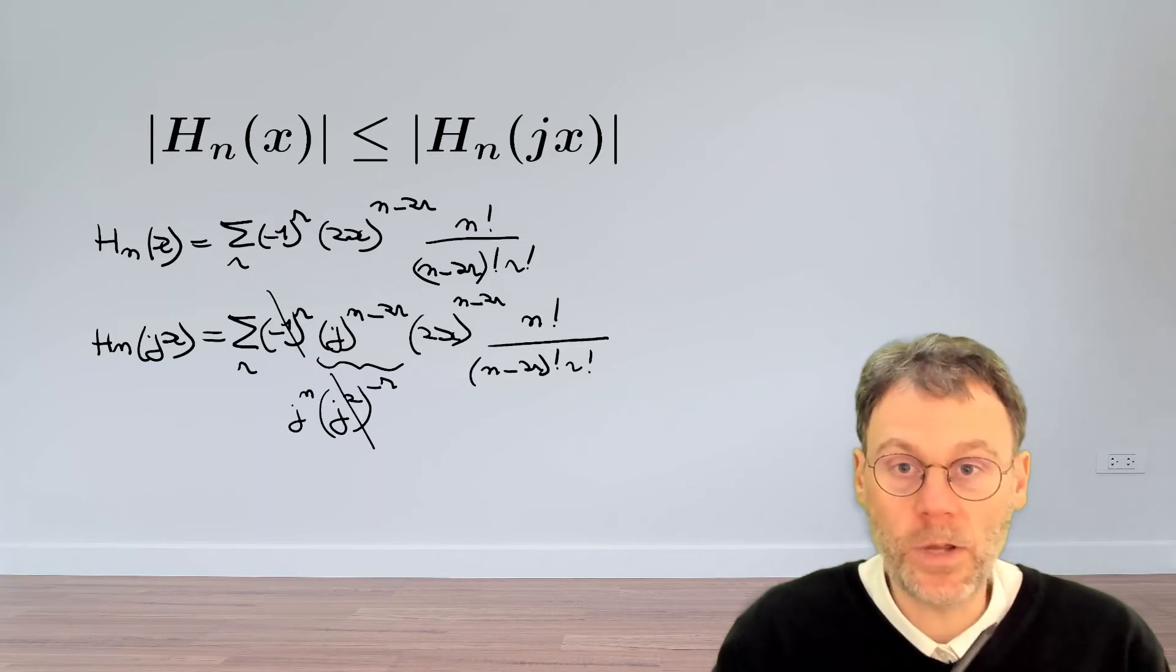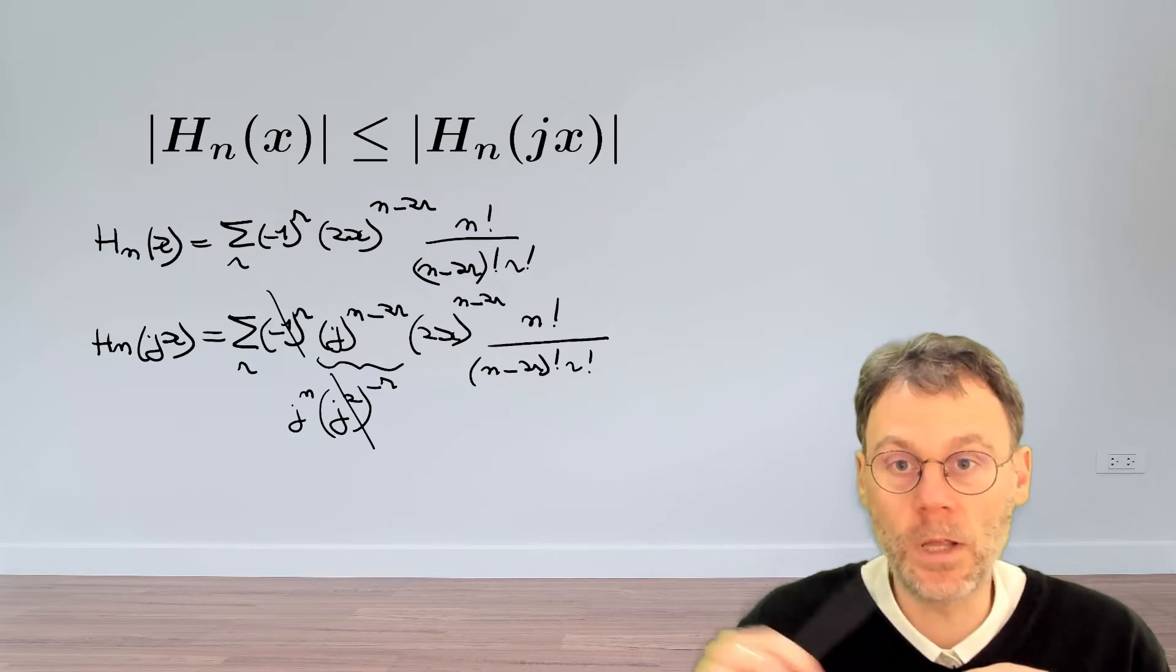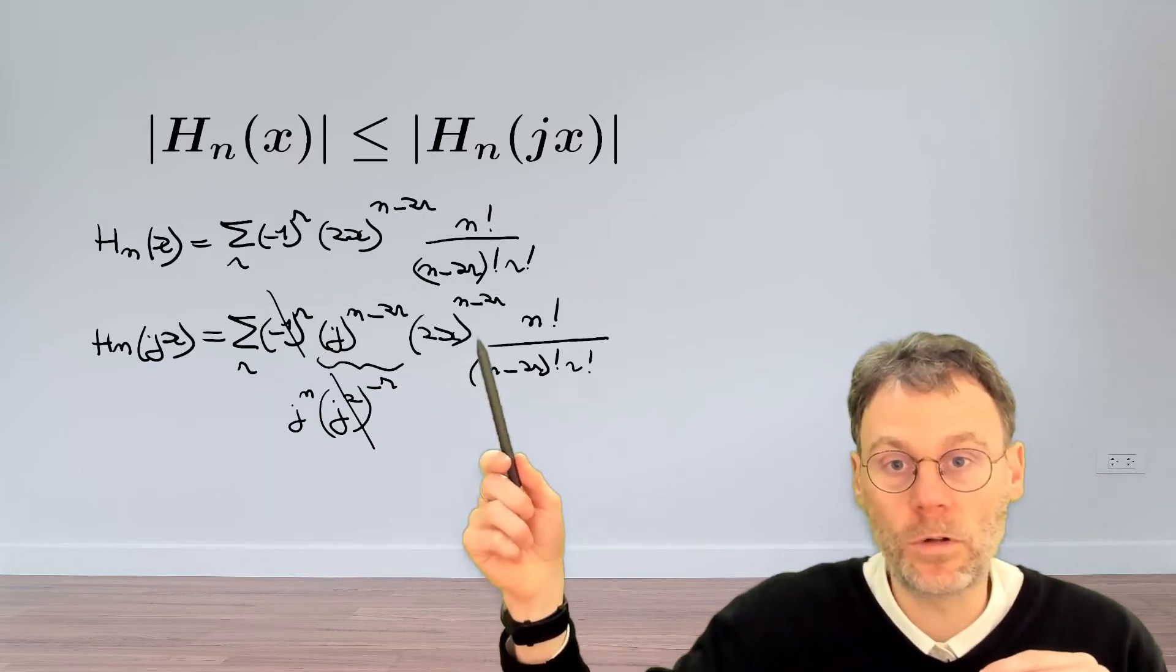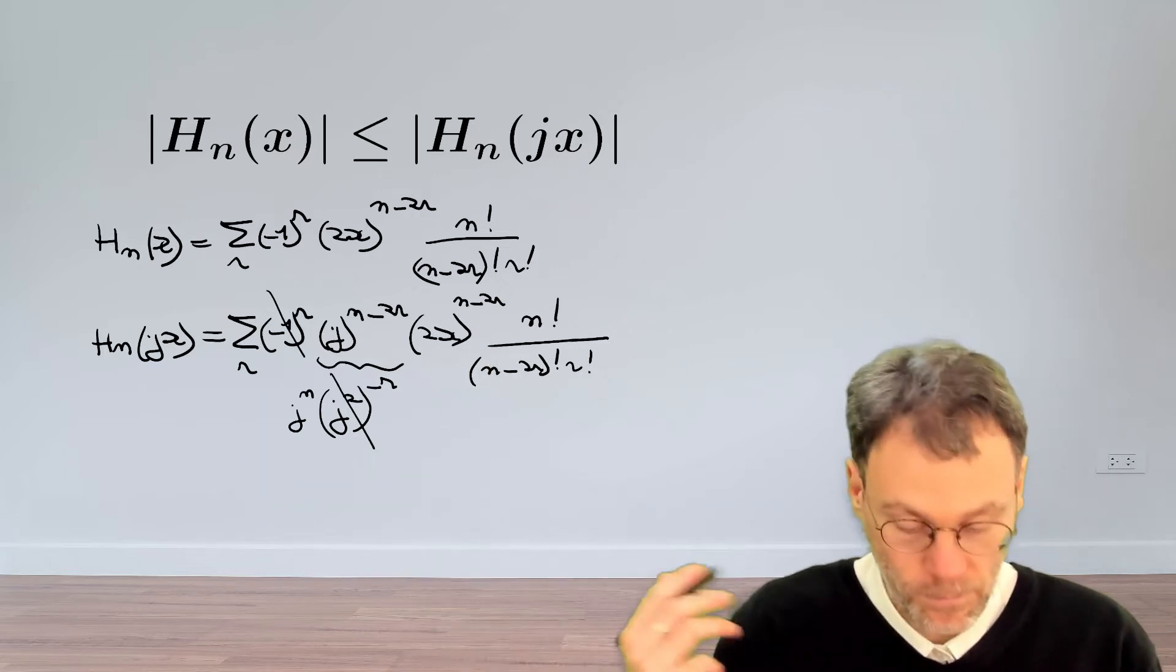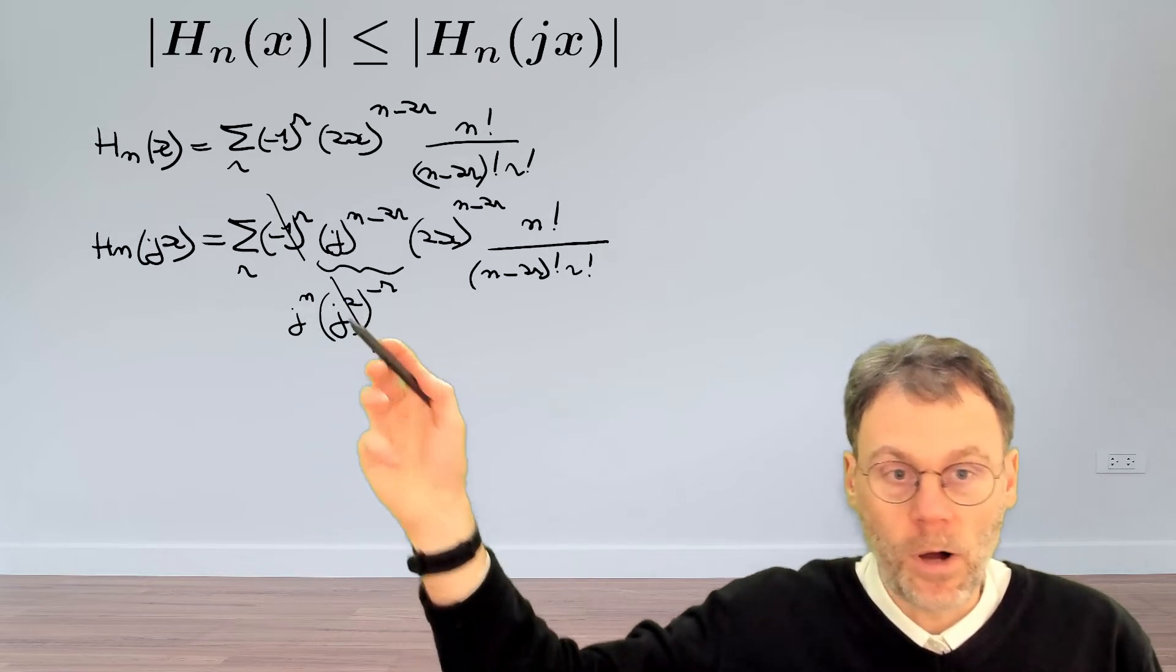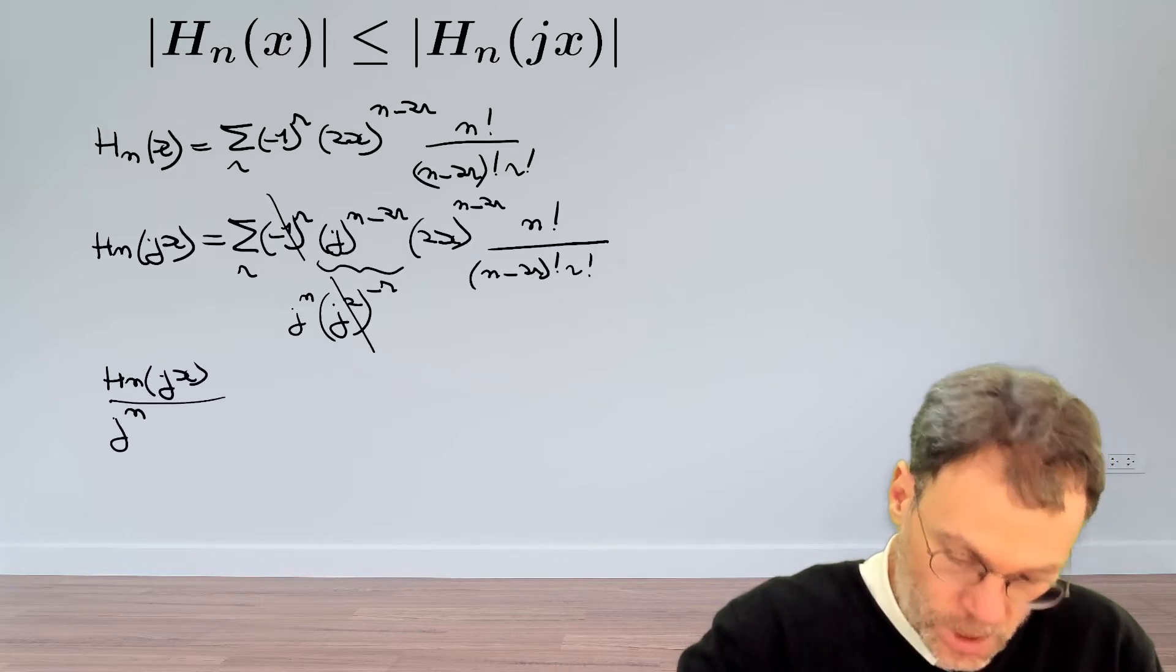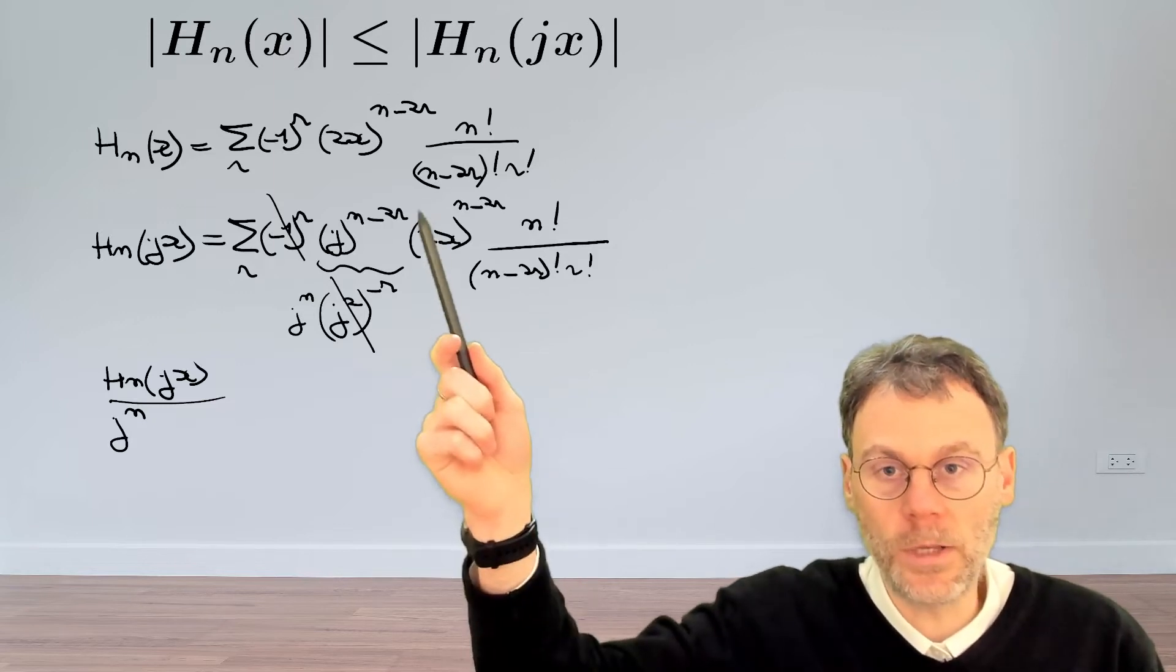So next we need to be a little bit creative. What we want to achieve here, for reasons that will become clear soon, is we want to make sure that this sum on the right-hand side here only contains positive terms, so we need to move all the stuff which is not a positive term to the left-hand side, and then we'll see what we can do with that.